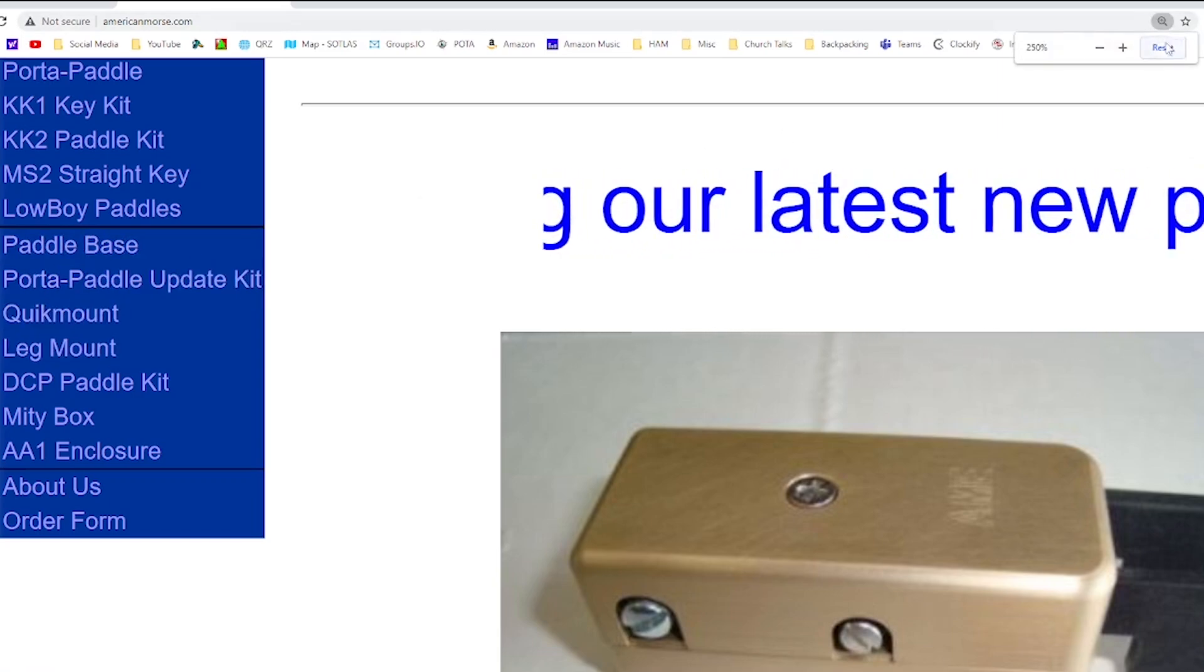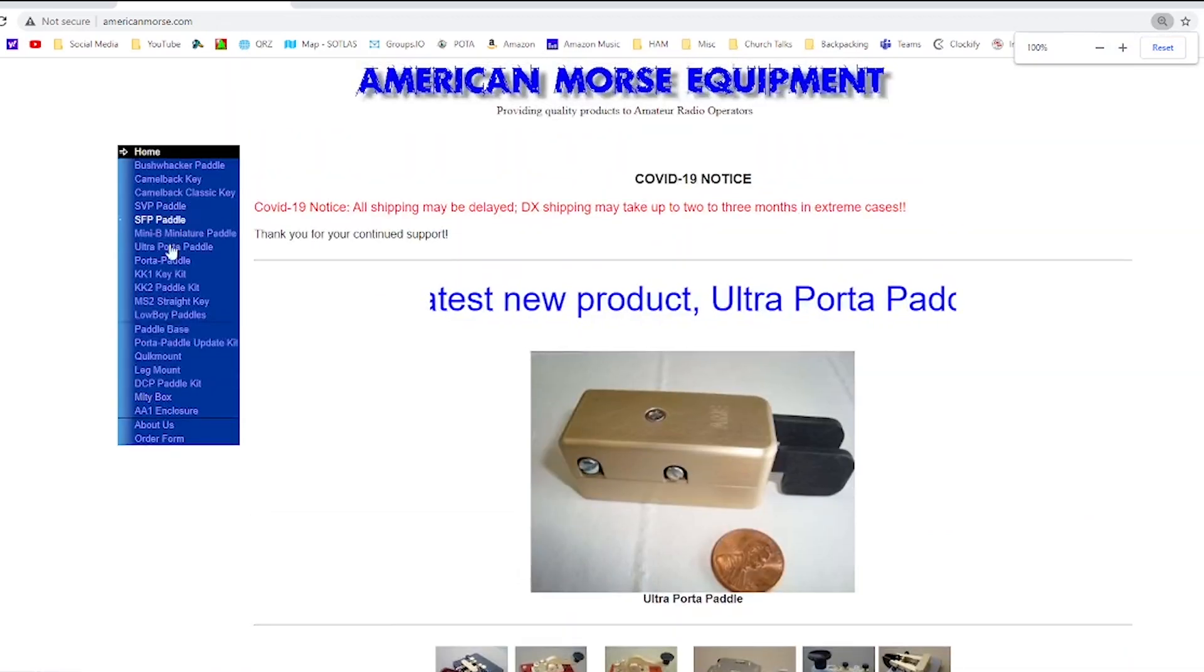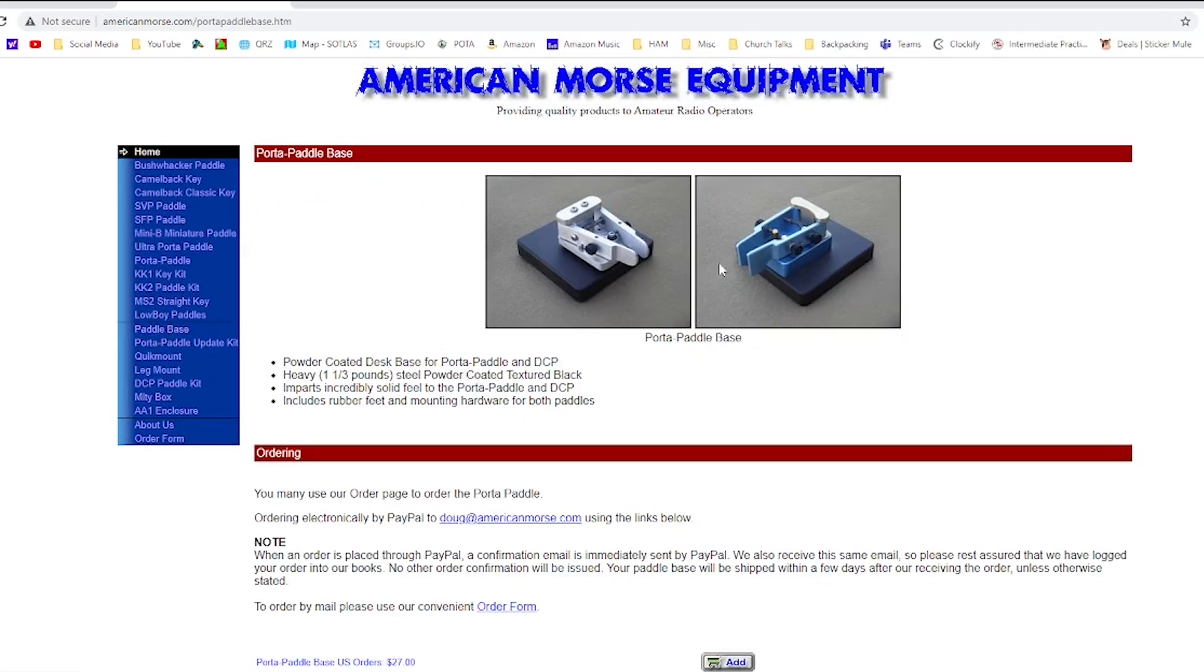I'm going to go ahead and zoom back out here real quick and we'll go with the paddle base. And what you can see here in the paddle base is it's basically it represents or it appears to be a jeweler's block of some sort that's been powder coated. So that's an option. Obviously it has the four holes where you can attach it. You can see the other the port-a-paddle itself on there but the ultra port-a-paddle also fits this option.